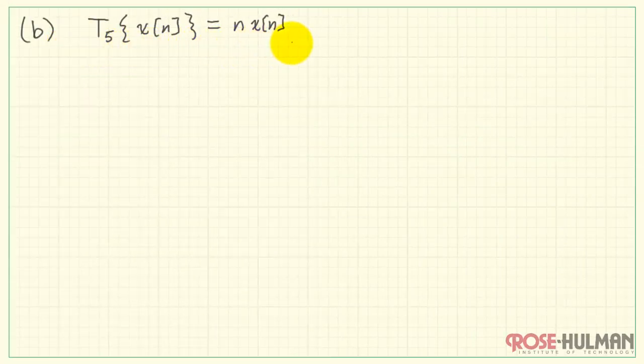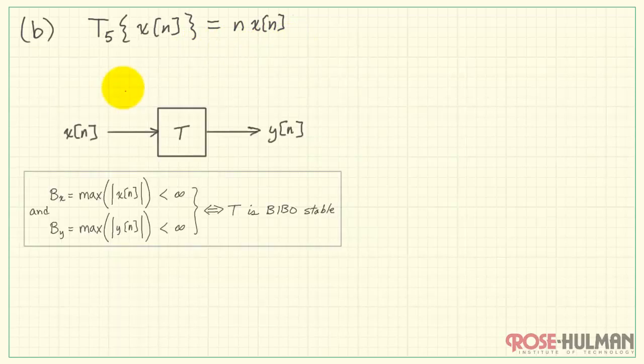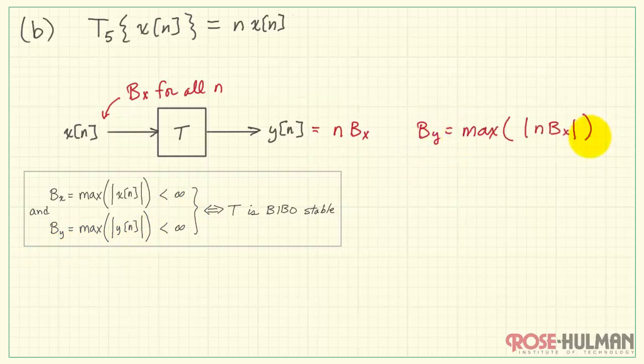Next, system T5 is N times X of N. I will apply my bound BX for all N and see what happens. We have N times X of N. X of N is BX. Therefore, our bound, which is the maximum absolute value of our output sequence, has to be max of the absolute value of N times BX.